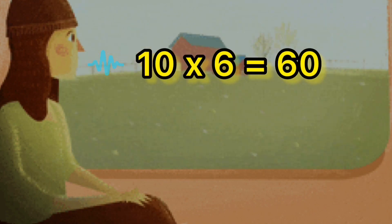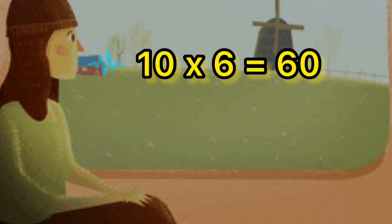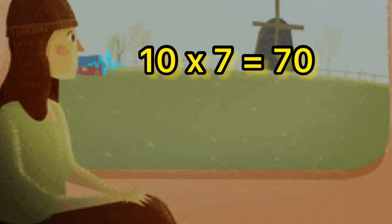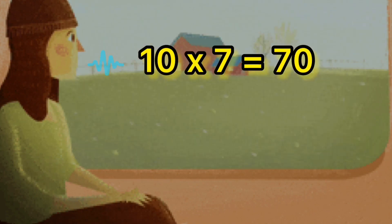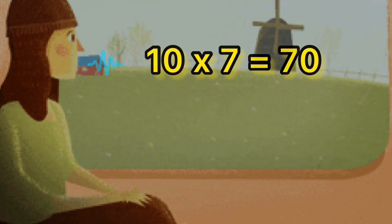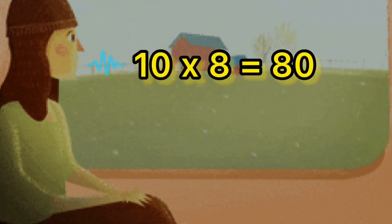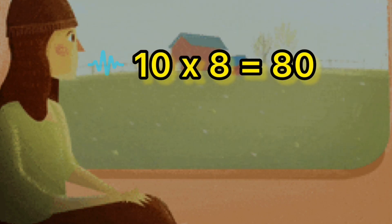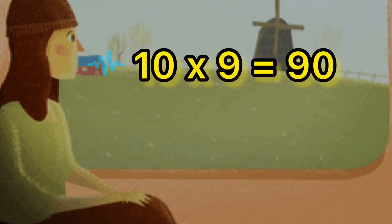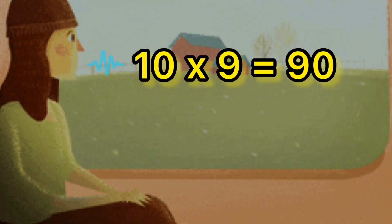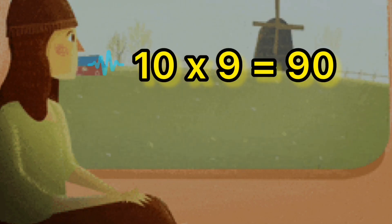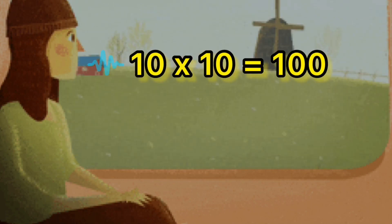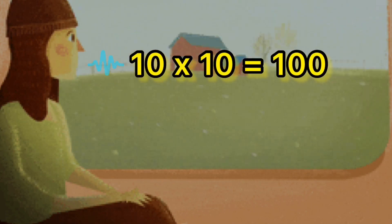Ten sixs are sixty. Ten sevens are seventy. Ten eights are eighty. Ten nines are ninety. Ten tens are hundred.